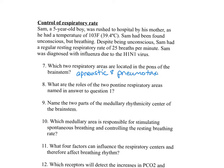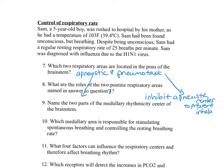Number eight: what are the roles of the two pontine respiratory areas? Both areas regulate the transition between inspiration and expiration. The pneumotaxic area sends inhibitory signals to the inspiratory area, switching it off just prior to overinflation of the lungs so that inflation stops. The apneustic area sends stimulatory signals to the inspiratory area to bring about deep, prolonged inhalation. The pneumotaxic area can override the action of the apneustic nuclei.